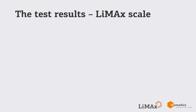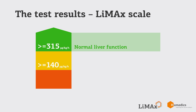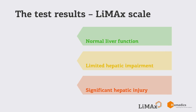The results of the LIMAX test stratify liver function capacity into three different levels of impairment. A score of over 315 micrograms per kilogram per hour indicates normal liver function. Values between 315 and 140 micrograms per kilogram per hour indicate limited hepatic impairment. If the score is less than 140 micrograms per kilogram per hour, liver function capacity is substantially compromised and the patient is at risk of significant liver injury.